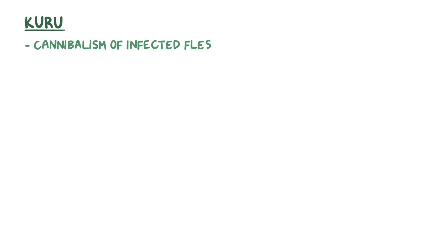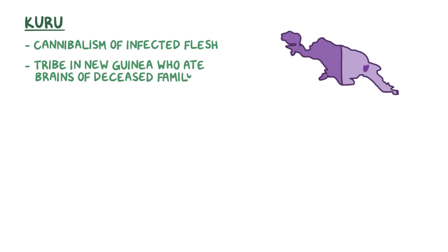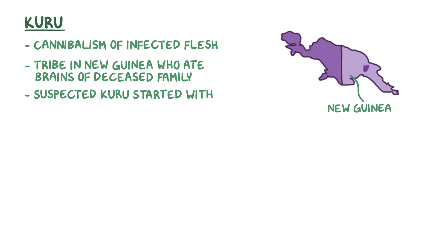Another type of spongiform encephalopathy is kuru, which is spread through cannibalism of infected flesh — when an individual eats the human flesh of an infected individual. Kuru famously affected a tribe in New Guinea who ate the brains of deceased family members, and in this way the misfolded prion proteins passed from person to person. Since the symptoms are similar to those of Creutzfeldt-Jakob disease, it's suspected that kuru started when one of these tribespeople acquired sporadic Creutzfeldt-Jakob disease.